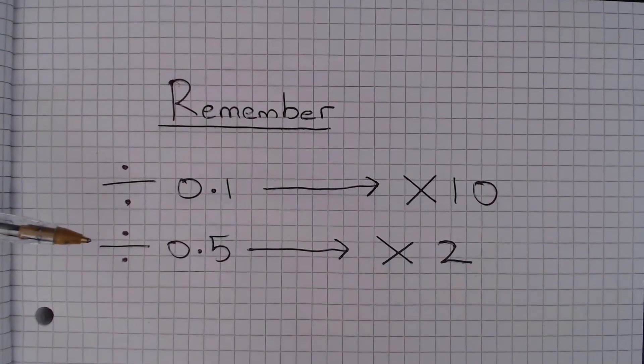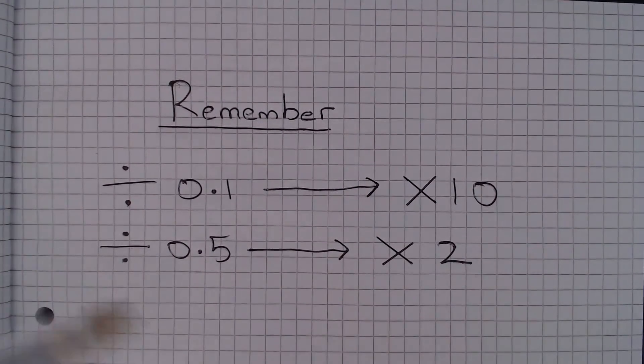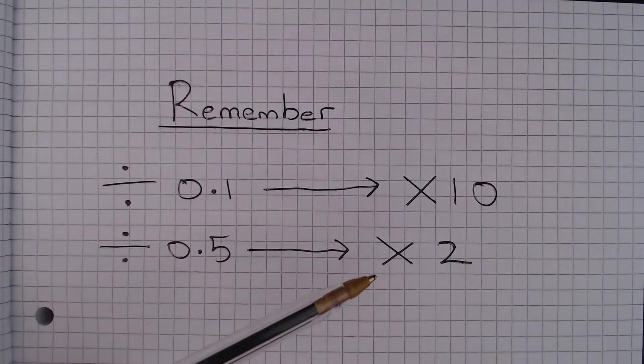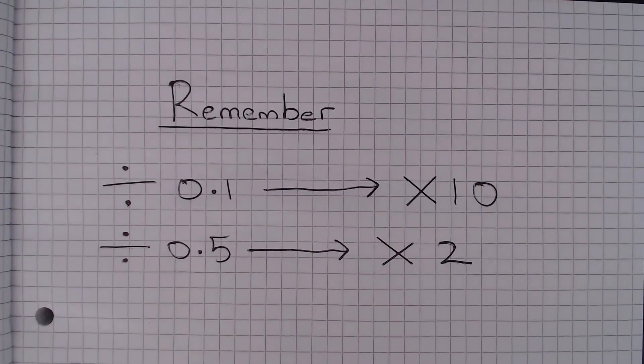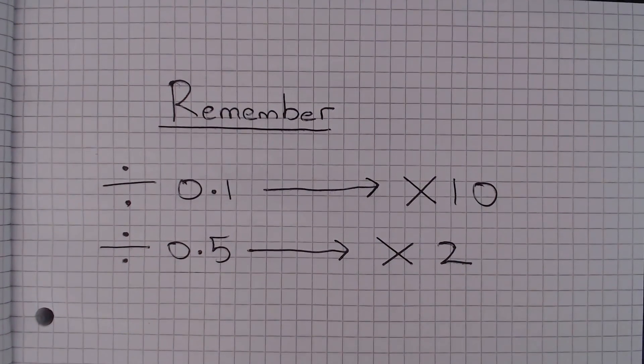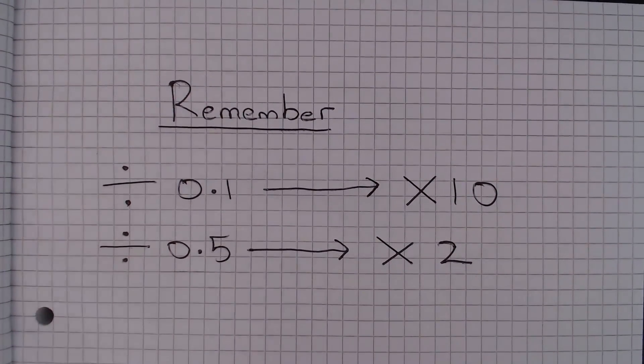Likewise, if you are ever asked to divide by 0.5, that is exactly the same as multiplying by 2. Now of course you can do the method we did in the previous page and you will get exactly this result anyway.